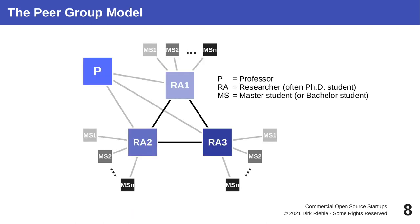Things change a little bit when you are part of a group. You still have responsibility for some part of the system — the part you are exploring for your dissertation and responsible for in the startup product — but it is one of multiple components, since other research associates also have to focus on their own components. In general, this is a preferable model to the solo founder model. I call it the peer group model, based on the peer group model of open source.